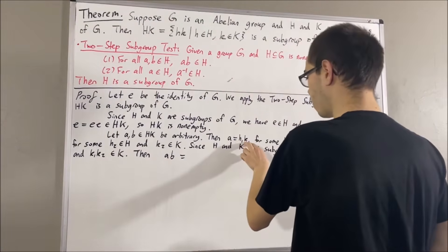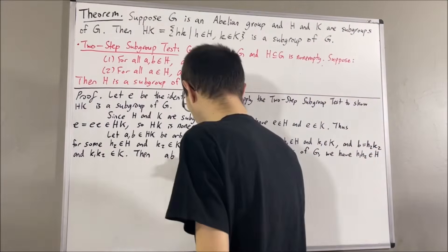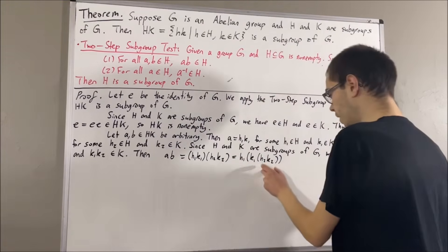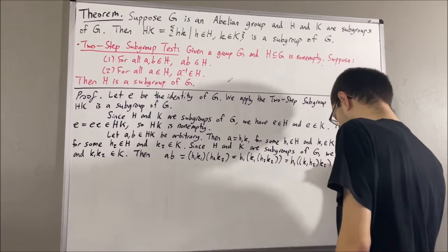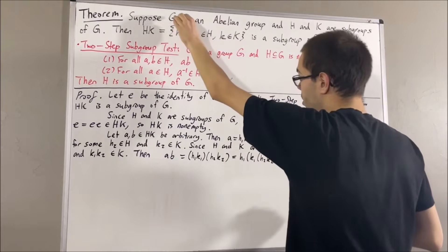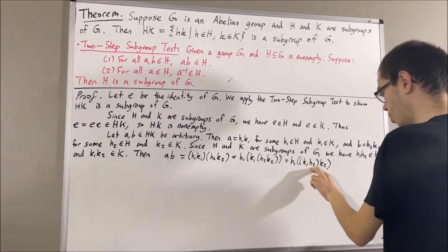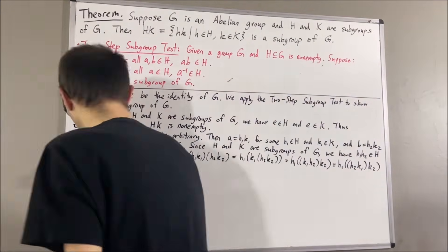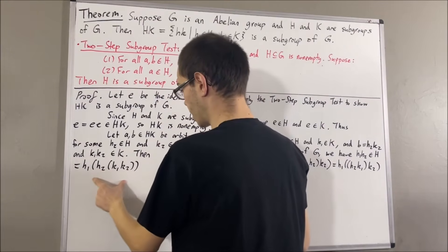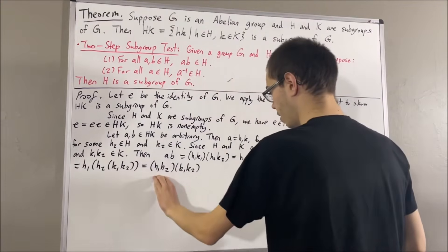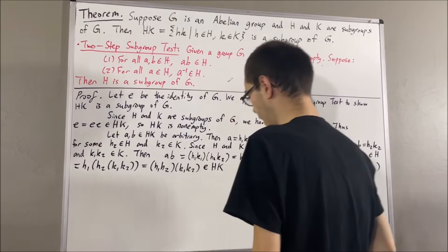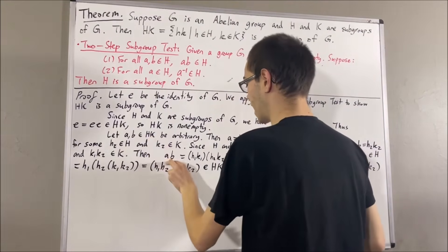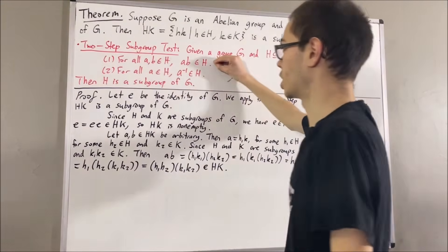First of all, we can replace a with h1 k1 and b with h2 k2. Then, since the associative law holds for groups, we can move the parentheses around k1 times h2 k2, and then move the inner parentheses around k1 h2. Since g is abelian, any pair of elements in g commute, so we can swap k1 h2 and write it as h2 k1. By the associative law, we can move the inner parentheses around k1 k2, and then move the outer parentheses around h1 h2. This fits the form to be an element of hk, so this shows ab is an element of hk. Given any two elements a and b in hk, we have that a times b is an element of hk, verifying that hk is closed under the operation of g.